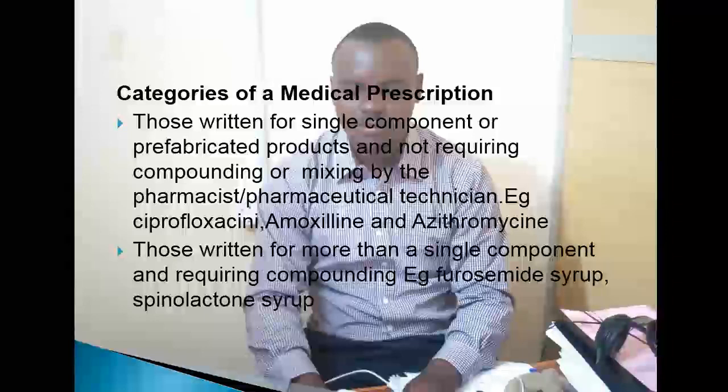Aina nyingine ni zile ambazo maelekezo yanakwenda kutengenezwa — compounding. Mfano, frusemide syrup — kama hatupalikuwa na frusemide syrup, tunahitaji kutengeneza kwenye compounding room. Hatupalikuwa na spironolactone syrup, kwa hivyo tunahitaji kutengeneza kwenye compounding room. Pia hatupalikuwa na metformin syrup, glibenclamide syrup, hydralazine syrup — dawa nyingi ambazo hazipo tayari na zinapaswa kutengenezwa kwenye compounding room.